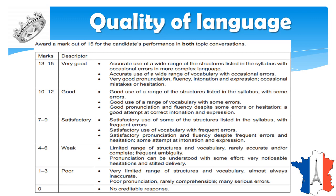Then comes very good marks — that is 13 to 15. A student getting 13 to 15 will have accurate use of a wide range of structures listed in the syllabus with occasional errors, accurate use of a wide range of vocabulary, and very good pronunciation, fluency, intonation, and expression. That's why we are here watching all these videos — so that you can get that fluency, speed, and no hesitations or very few mistakes. This is what you have to practice. These are the list of instructions for the IGCSE exam.